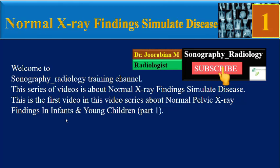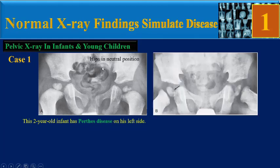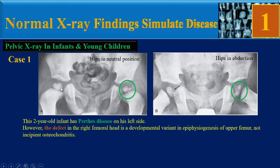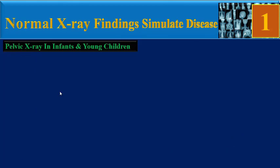We will review 10 cases together. Case 1: a two-year-old infant has obvious Perthes disease on the left side. This X-ray is in neutral position; this is the abduction view. We can see obvious Perthes disease findings on the left side. However, the defect in the right femoral head is a developmental variant in epiphyseal ossification of the upper femoral — not incipient osteochondritis.